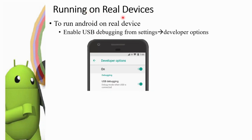The next topic is running on a real device. The emulated virtual device is not the same as a real device — that is why we also run on mobile. To run Android on a real device, enable USB debugging from Settings under Developer Options.